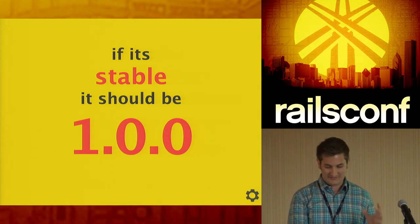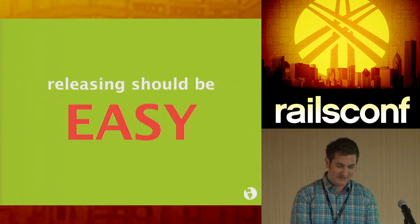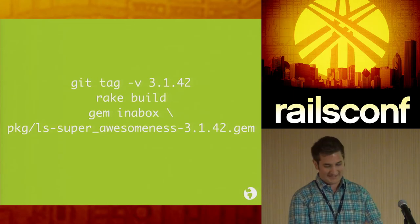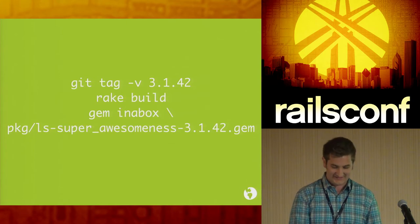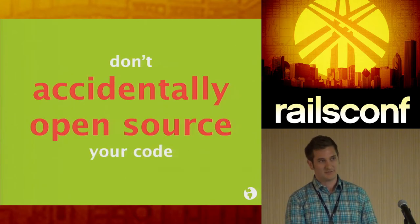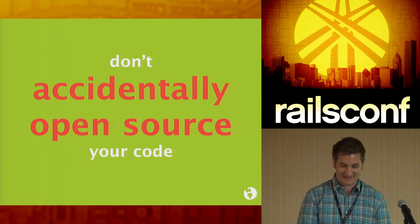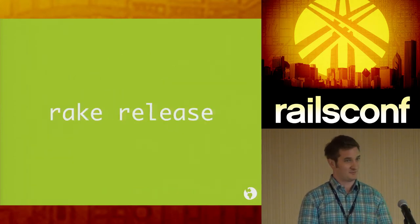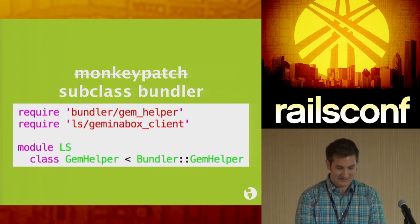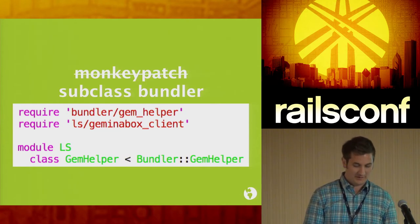Now we need to release your gem. Releasing should be easy — `rake release` via Bundler is really easy. But don't accidentally open source your code: there are bots that mirror RubyGems right away and it's very hard to take back. To keep everything internal, we rewrote our own gem that inherits from Bundler's GemHelper rather than monkey-patching Bundler.